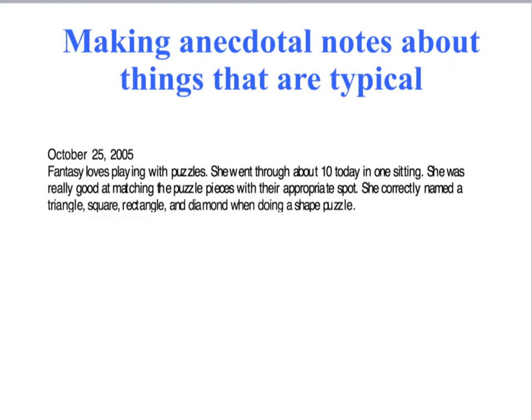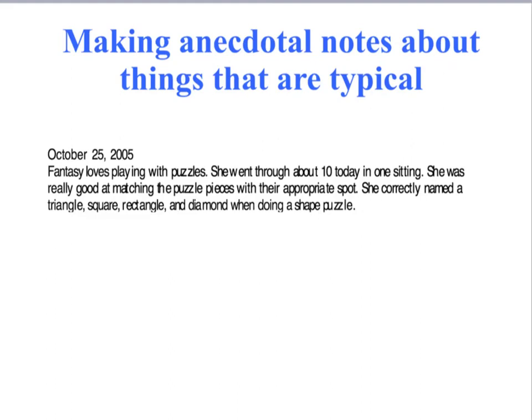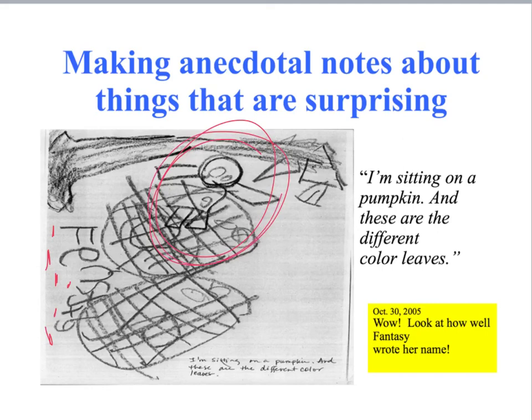Often teachers make notes about behaviors or activities that they think are really typical of a student, such as Fantasy's interest in playing with puzzles. And other times teachers make anecdotal notes or take work samples about things that surprise us. Fantasy drew this picture of herself sitting on a pumpkin with different colored leaves, but what the teacher marveled at was how clearly Fantasy wrote her name — F, E, N, there's an S, there's a T, there's something approaching a Y — sitting on top of those pumpkins. This showed progress for Fantasy; it took the teacher by surprise because she did not know that Fantasy could do a picture with this level of detail.